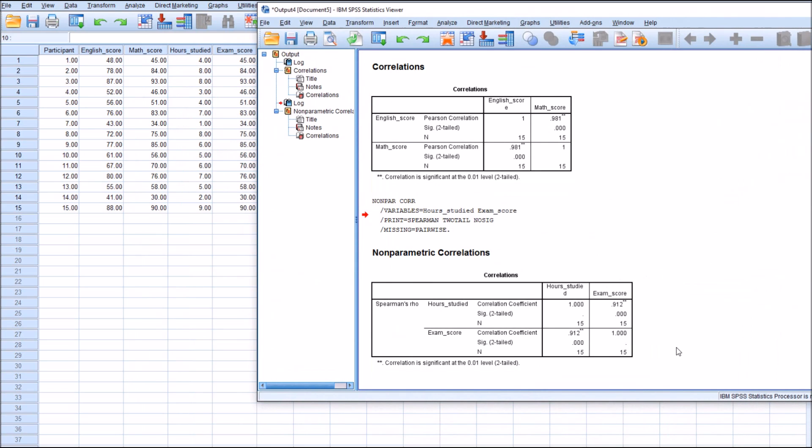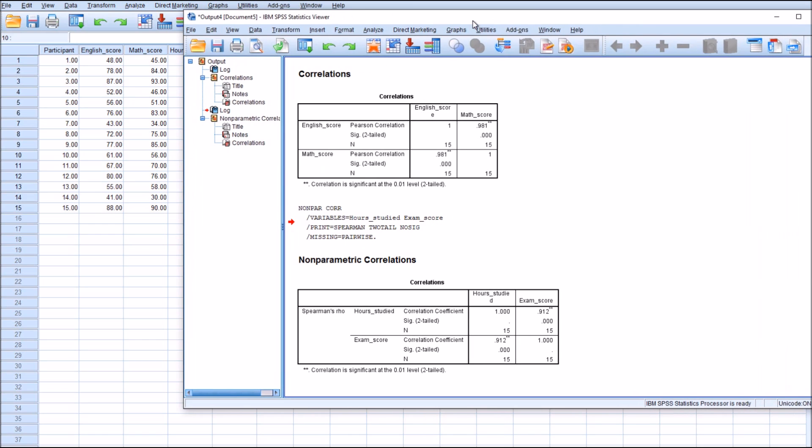We can't say that hour studied does cause a higher exam score. But it does lead us to think along those lines that the more you study, the higher your exam performance would be. But we have to do a linear regression in order to accurately determine just how much studying is needed to have an increase in score. But for the purposes of this tutorial, this is the final output that we would be needing.